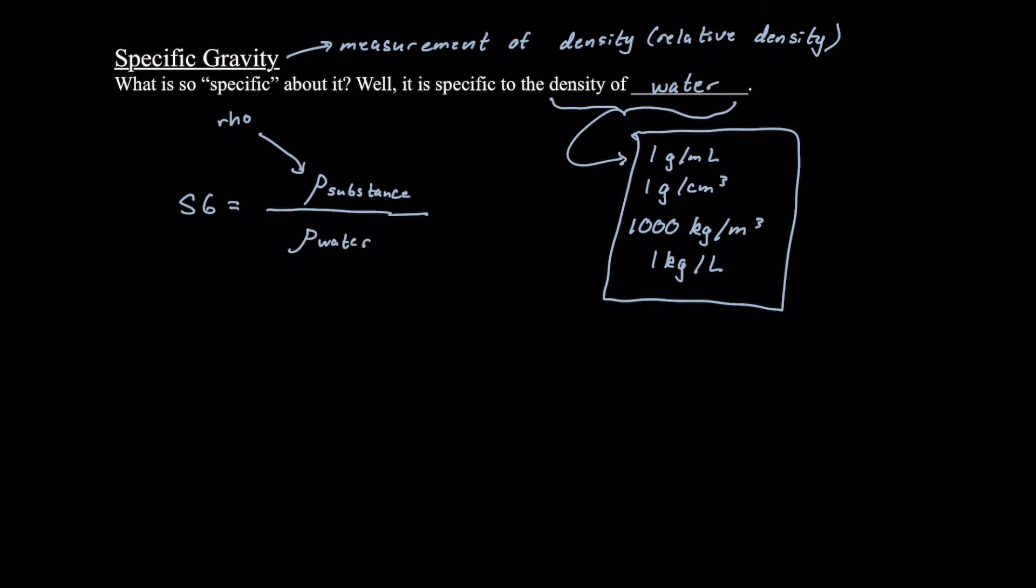And rho can be any of these densities that I have written. So SG therefore must be unitless, and that is because the units will cancel out. If we use, let's say for the density of water, grams per milliliter, we want to measure the density of our substance also in grams per milliliter.